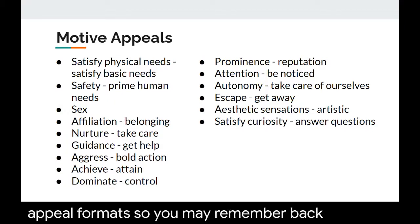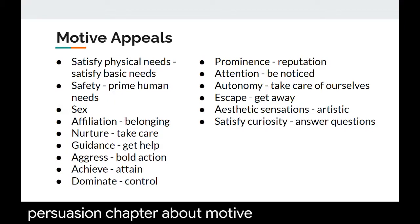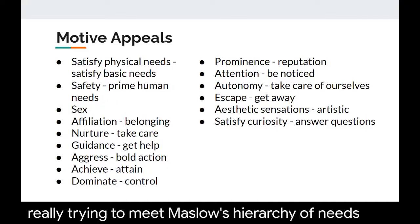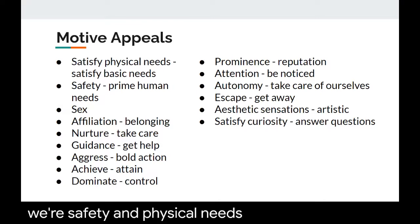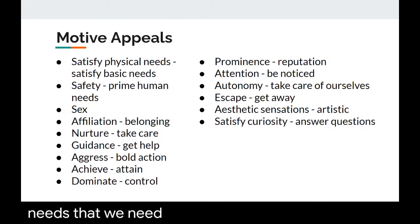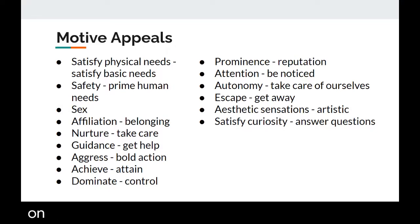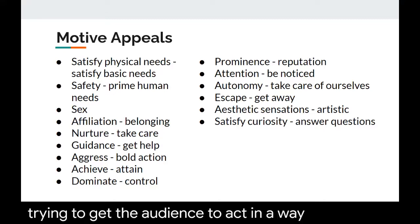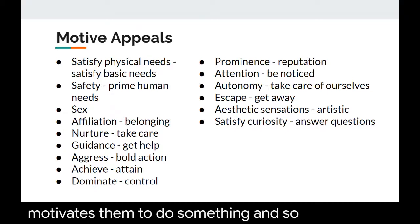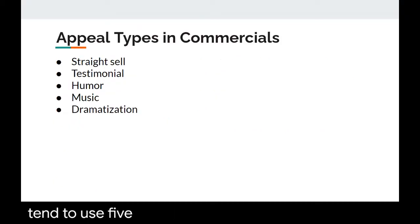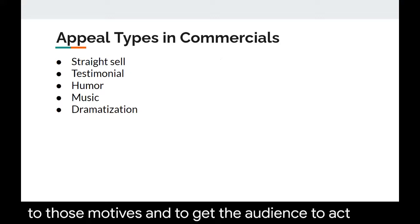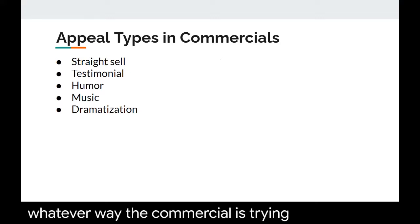You may remember back to our persuasion chapter about motive appeals. These are really trying to meet Maslow's hierarchy of needs, where safety and physical needs tend to be the prime needs, as well as love and nurture, protection, self-actualization, and onward. Using these motive appeals, we are trying to get the audience to act in a way that motivates them to do something.